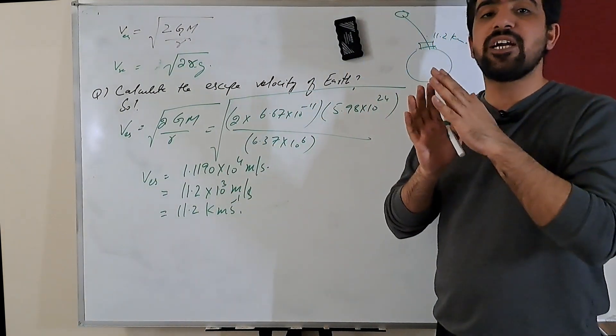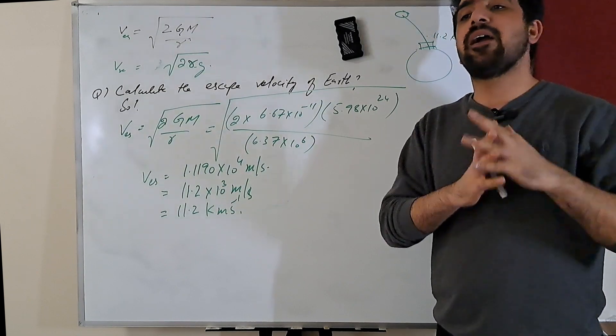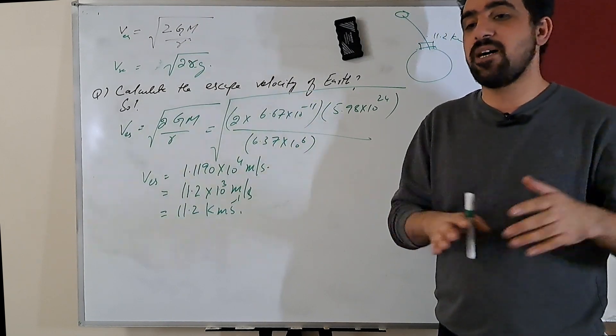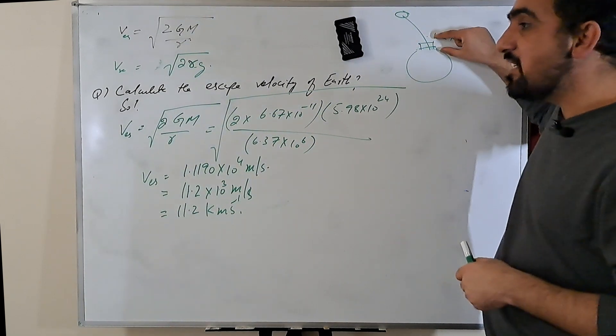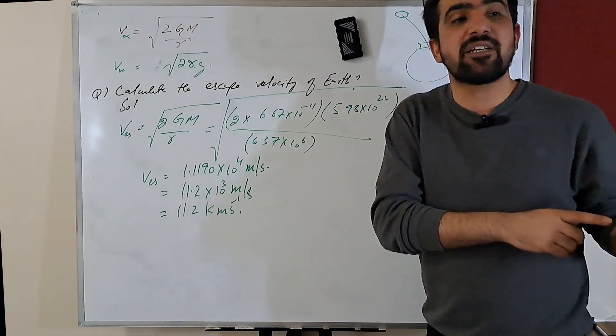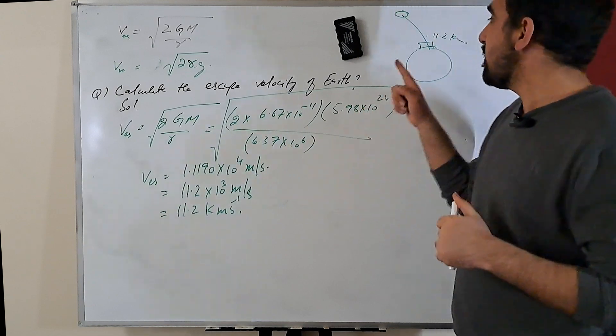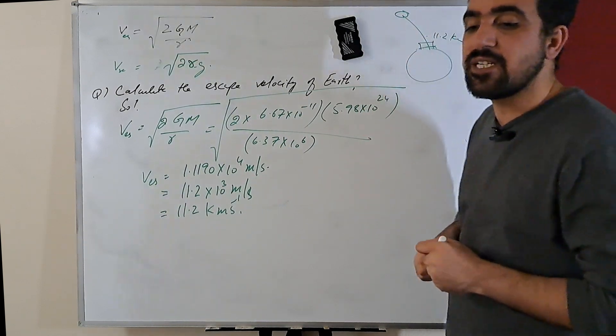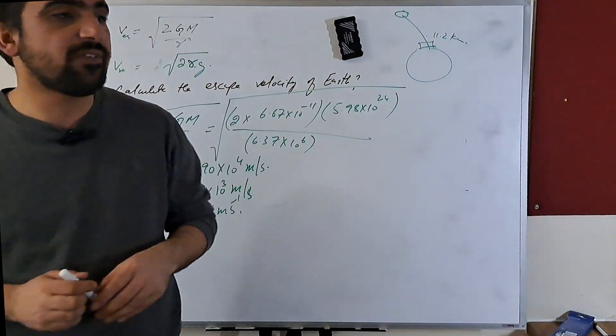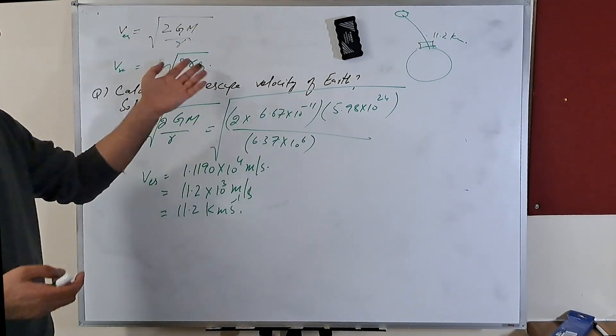It doesn't mean that heavier objects require higher speed and smaller objects require smaller speed. Yes, the energy required by heavier objects is more and the energy required by smaller objects is less. But the speed for all kinds of objects is the same to leave the gravitational field of Earth or for other planets.